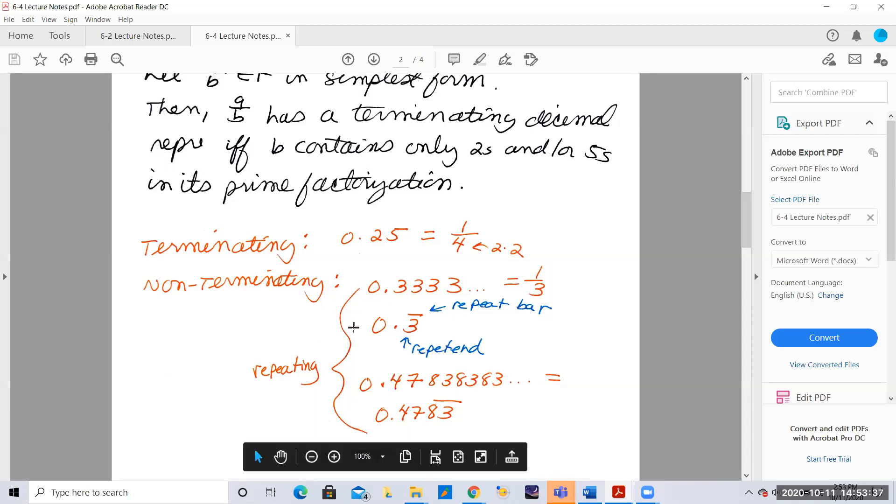These are all examples of non-terminating decimals. They don't terminate. These are repeating decimals. Here the 83 repeats, so the repeat bar only goes over the 83; 83 is the repetend.